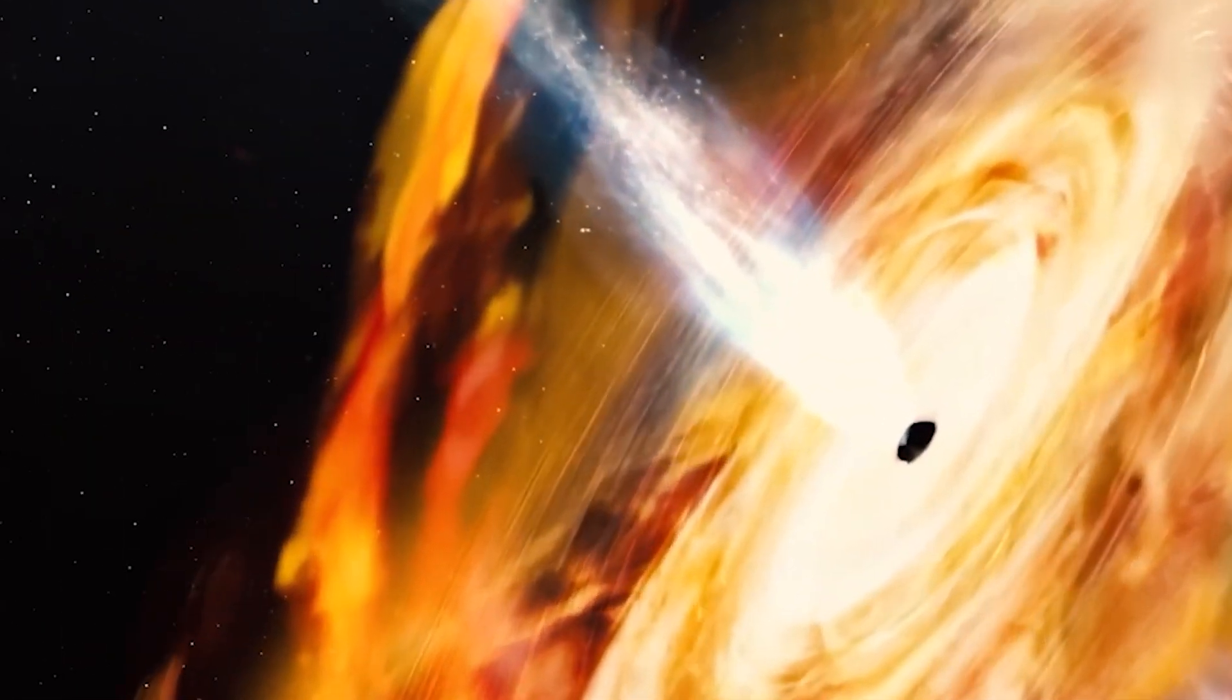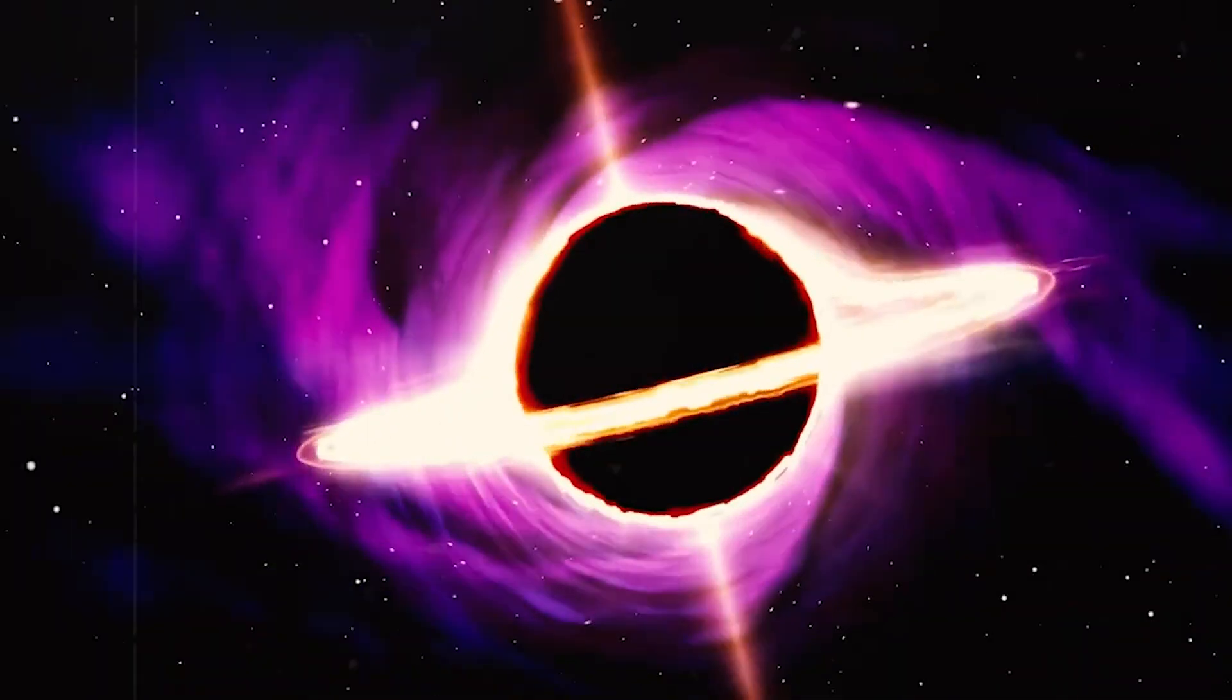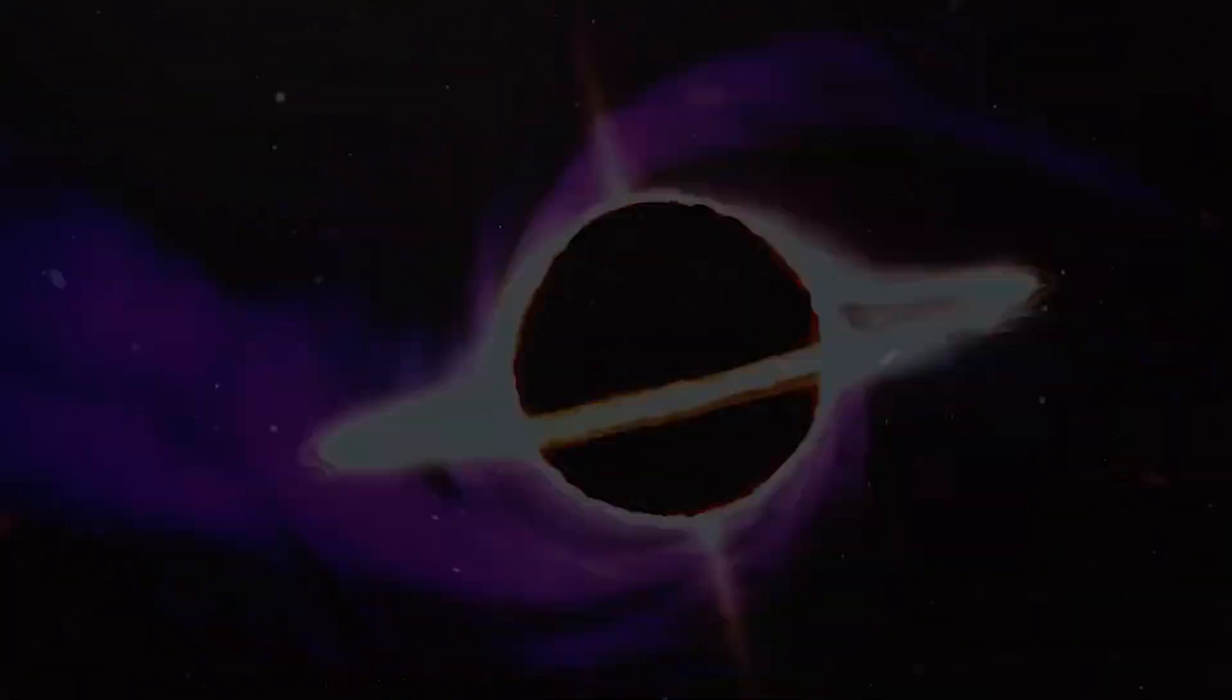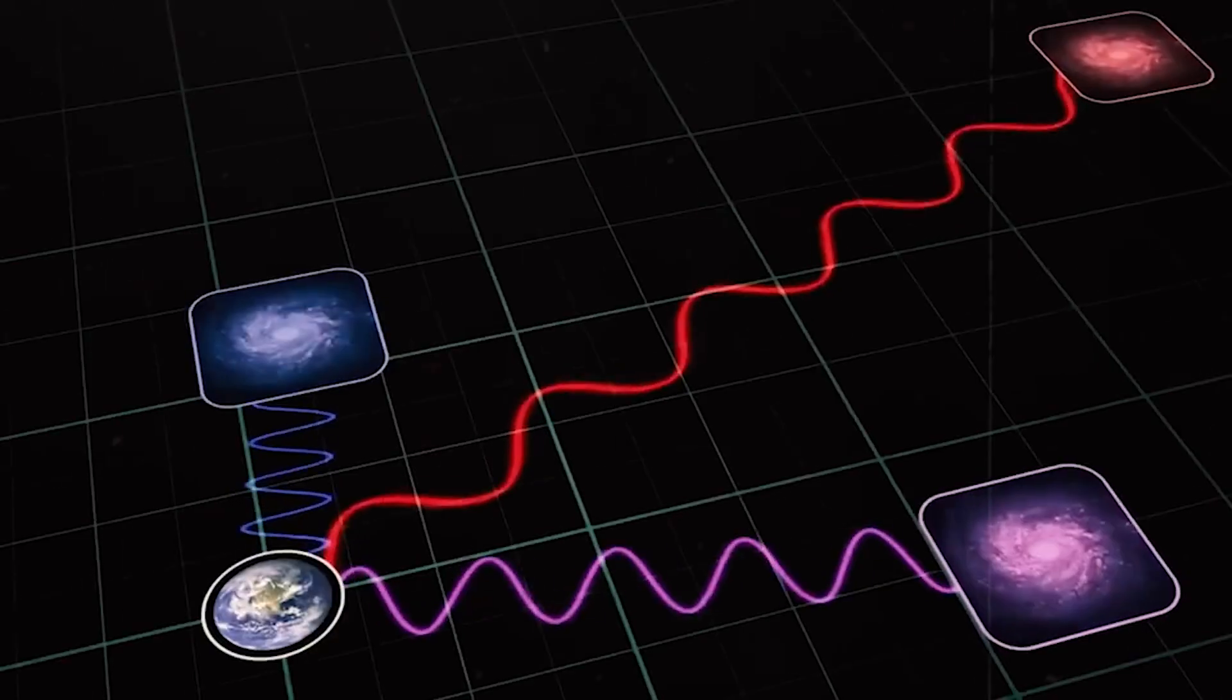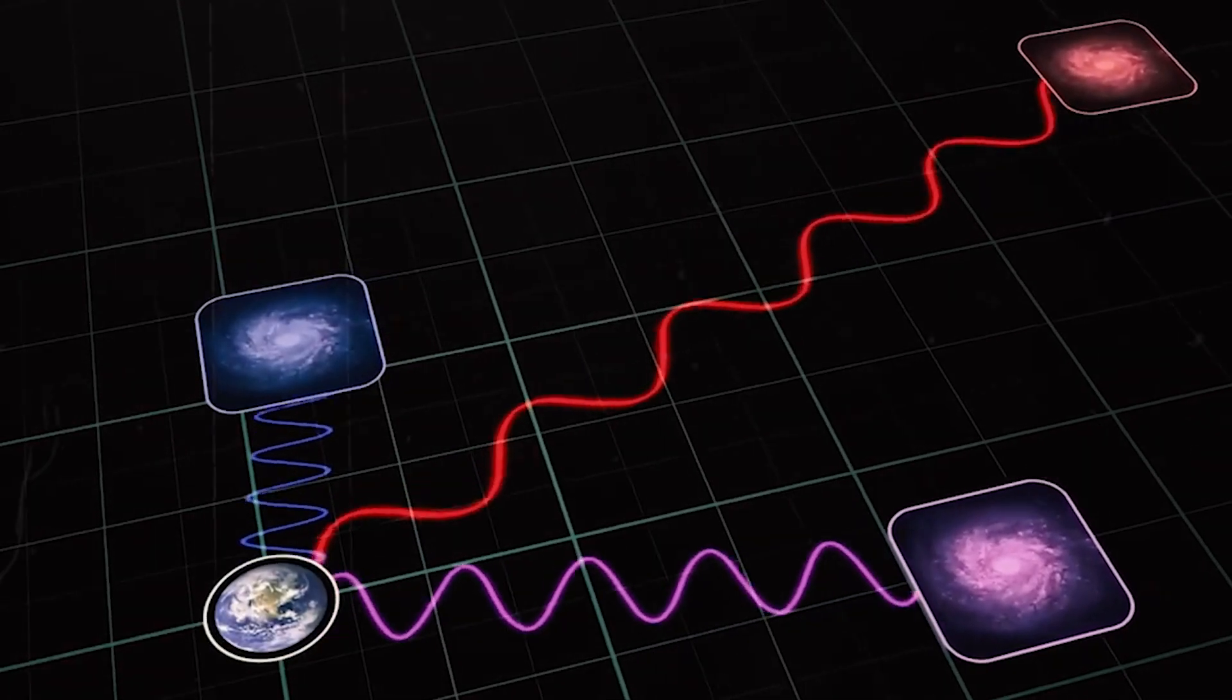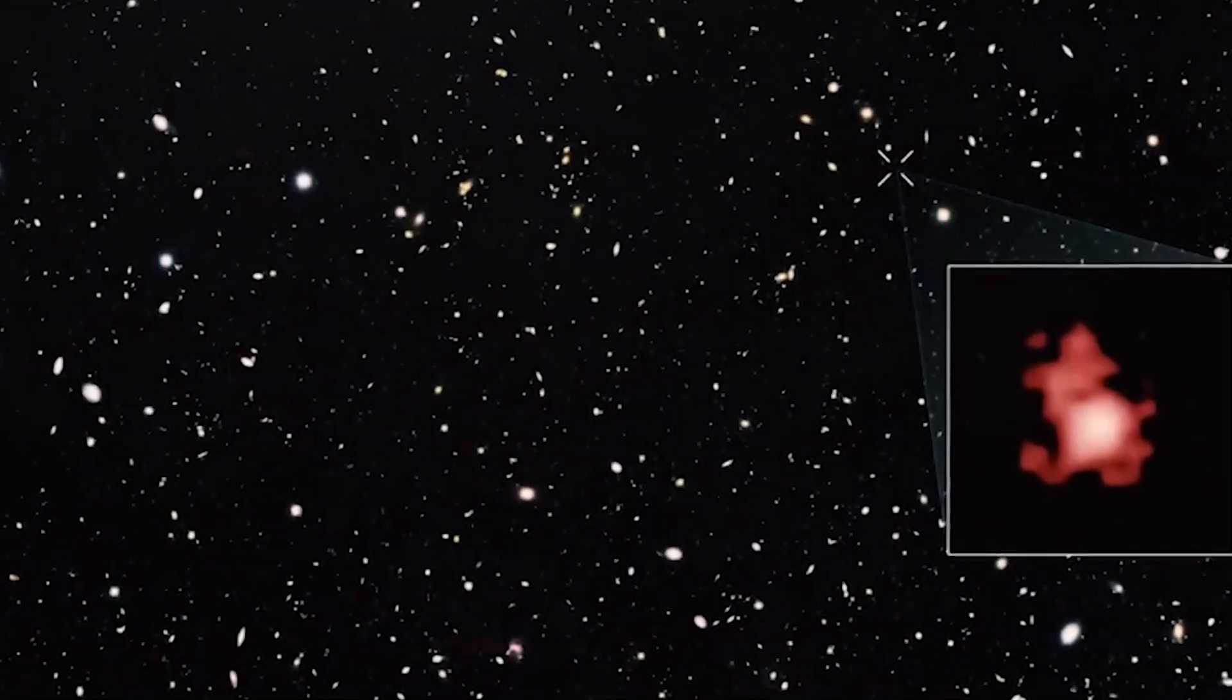This rate is so high that it is eating its host galaxy to death, consuming more than 100 solar masses of gas and dust per year. The distance and the age of the black hole and the galaxy are determined by measuring the redshift of light, as we explained before.